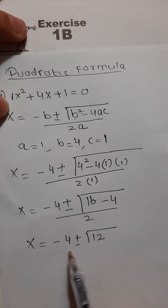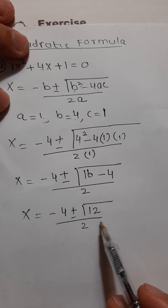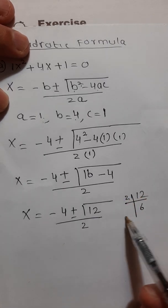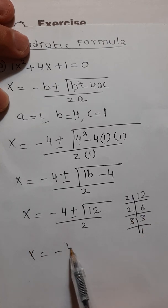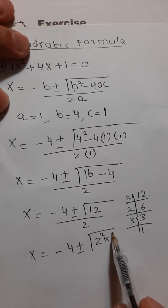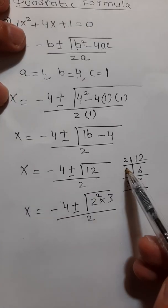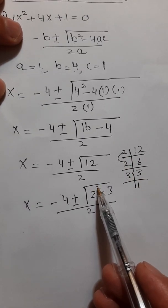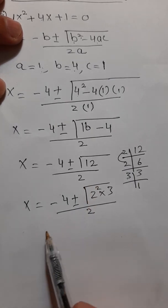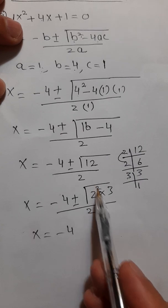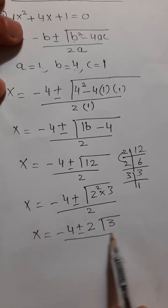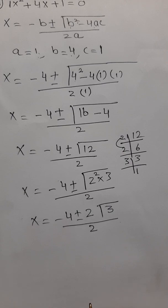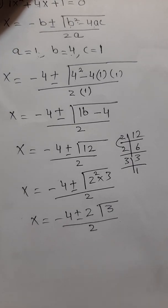We can factorize 12: 12 equals 4 times 3, which is 2² times 3. So x equals minus 4 plus or minus square root of 2² times 3, over 2. Since the square and square root cancel, 2 comes outside the square root, while 3 remains inside. So x equals minus 4 plus or minus 2√3, over 2. To solve further, we need the value of √3, which is approximately 1.73.